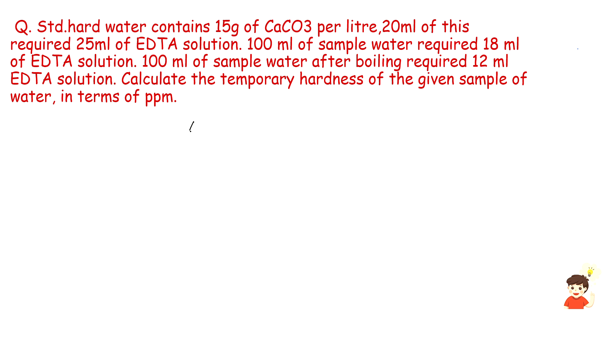Now we have our data: 15g CaCO3 per liter. That is what we have initially prepared. 20ml of hard water used, 25ml of EDTA. Now we have the standardization level. We will monitor the normalization. This is the standardization level.